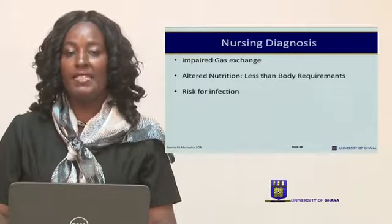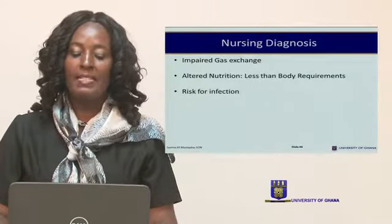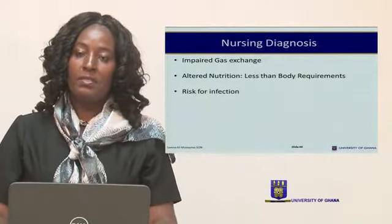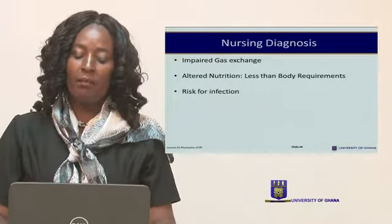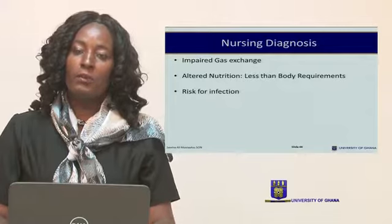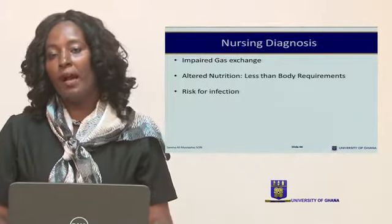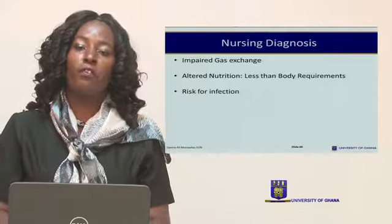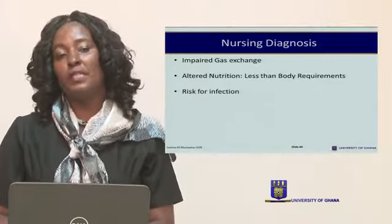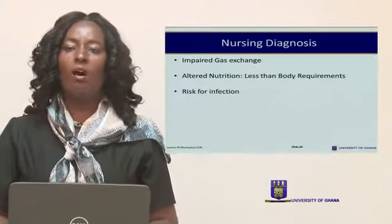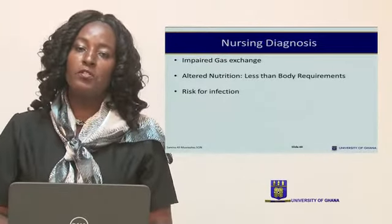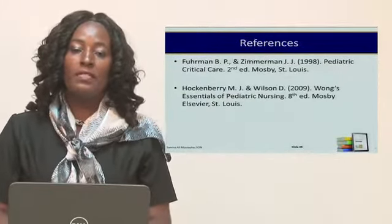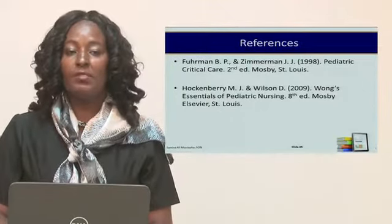Nursing diagnoses for respiratory distress syndrome include: impaired gas exchange related to prematurity or respiratory distress syndrome; altered nutrition — less than body requirements — also related to respiratory distress syndrome; and risk for infection related to prematurity or respiratory distress syndrome. Try to formulate additional nursing diagnoses as you go along. This concludes today's discussion.